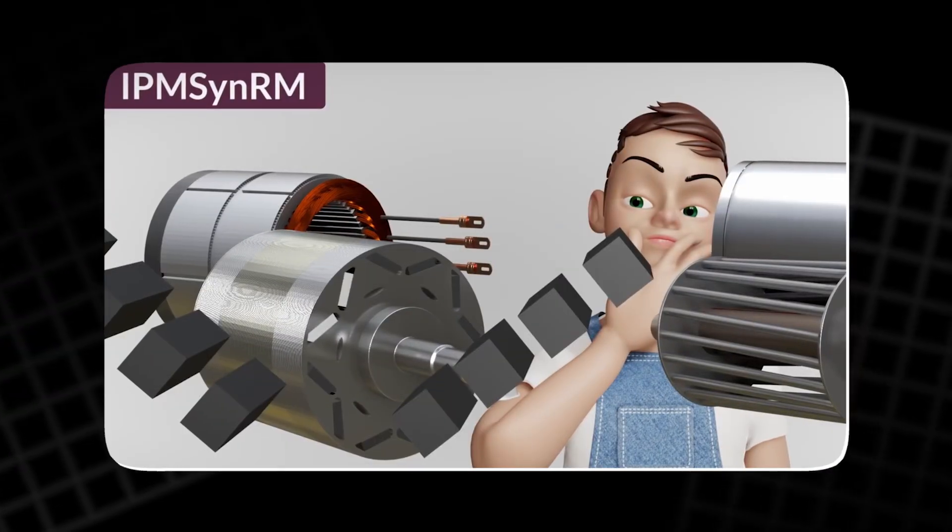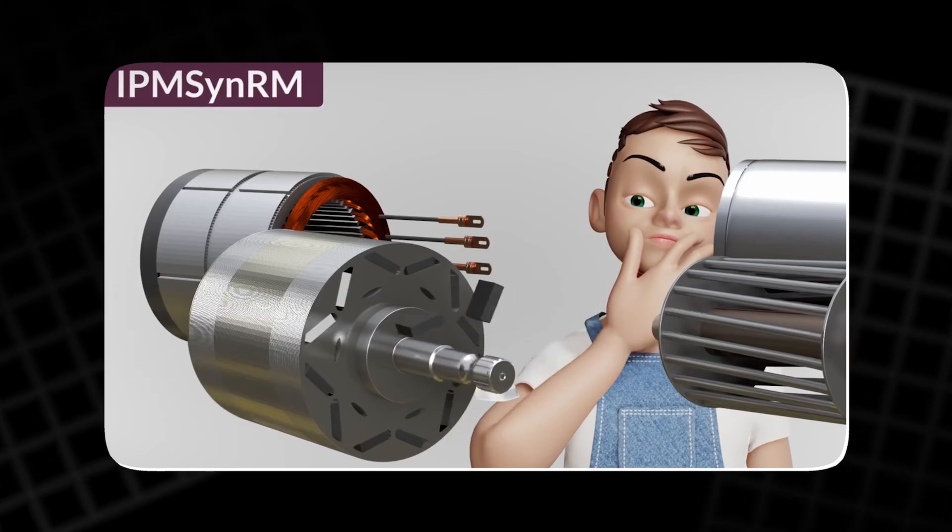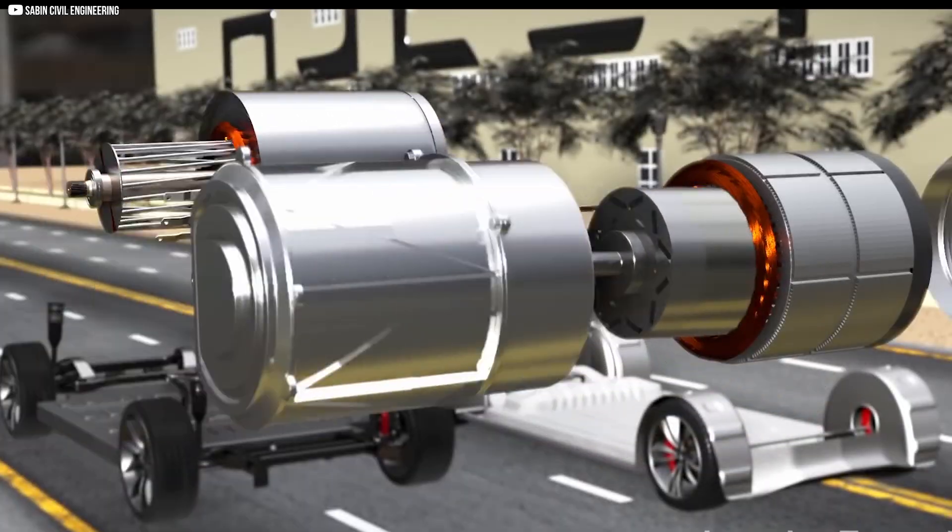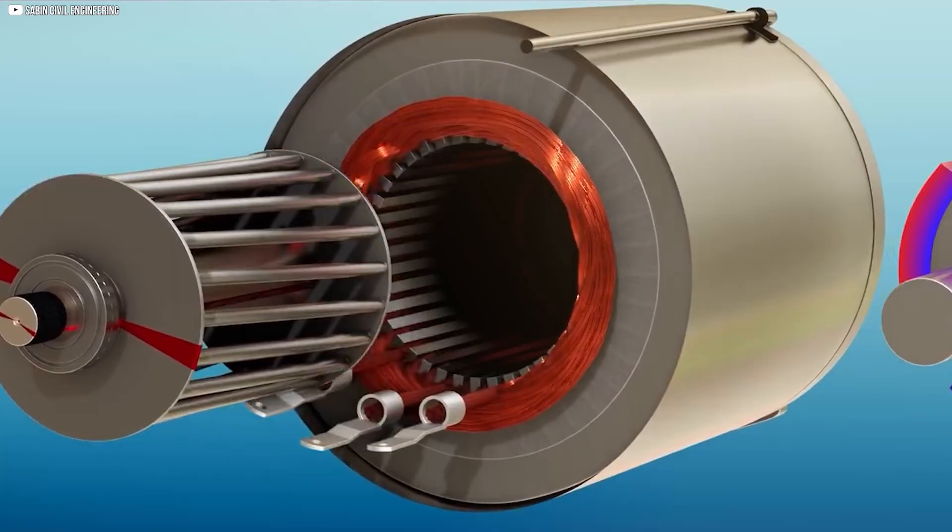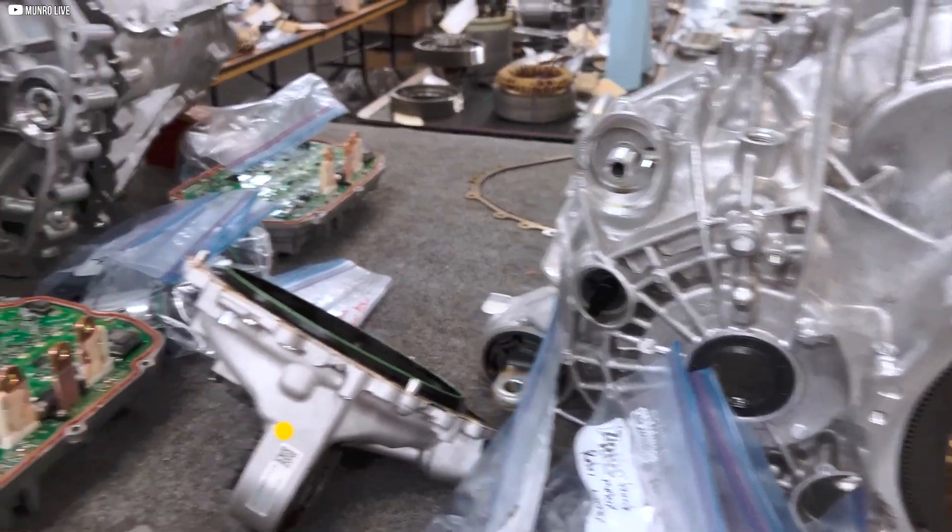It's worth mentioning that Tesla wasn't the first company to explore IPM-SYN-RM technology. Toyota used similar motors in the Prius Hybrid decades earlier. However, the Model 3's motor is more advanced thanks to better magnet placement, improved cooling, and smarter control systems.